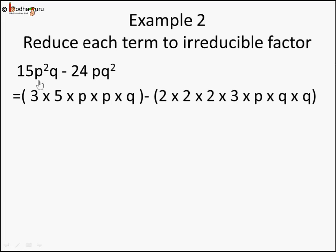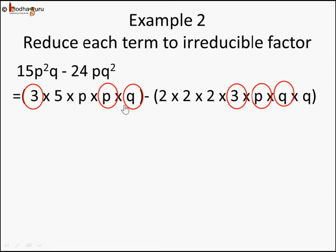This is the first step where we have reduced each term to its prime factors. Now try to find the common things. You can see 3, p, and q are common between both the terms. 2 is not in the first term, 5 is not in the second term. And remember: even though there are two q's in the second term, only one q is common; and even though there are two p's in the first term, only one p is common. So 3, p, and q are common across both terms.